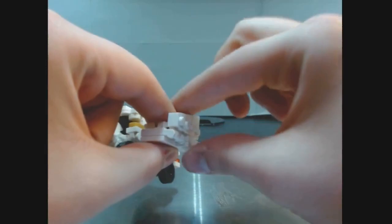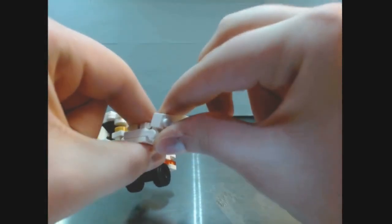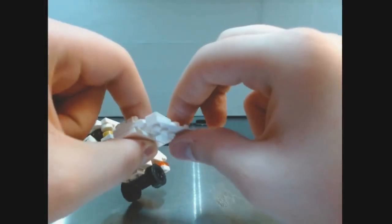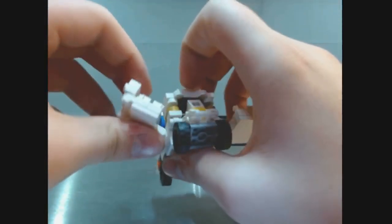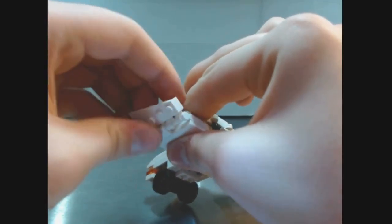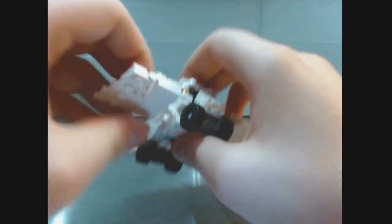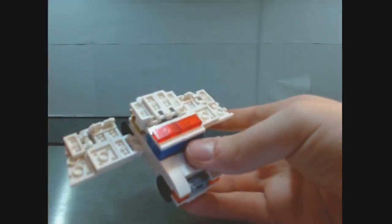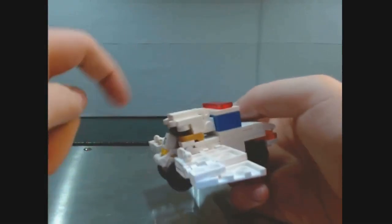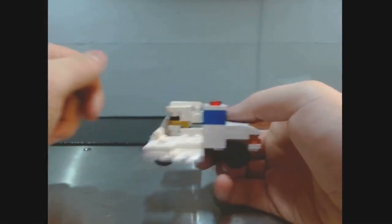But this hinge here moves down. And you take this top section. And it just flattens out. Just like that. The same thing on this side. And now you have the flying ambulance.